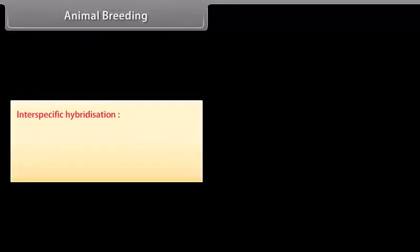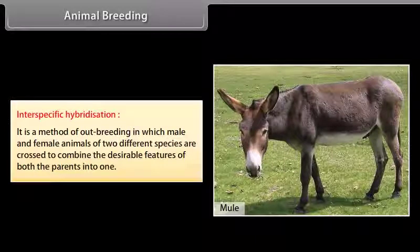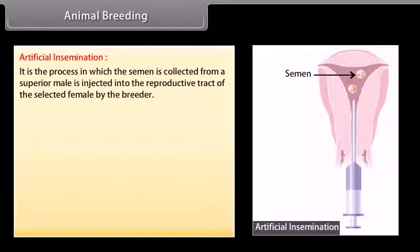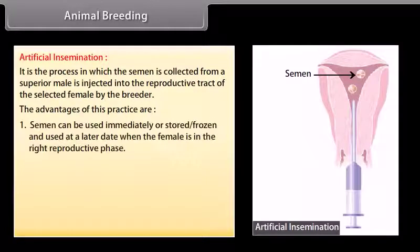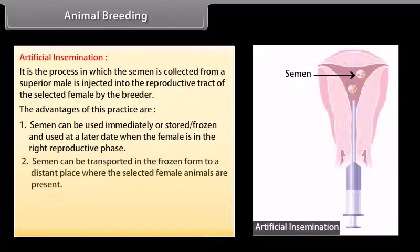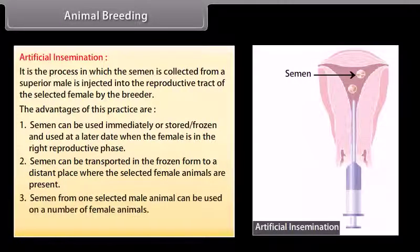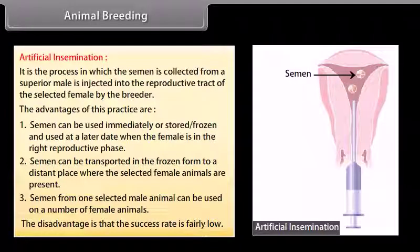Interspecific hybridization is a method of outbreeding in which male and female animals of two different species are crossed to combine desirable features of both parents. For example, the mule is produced by a cross between a male donkey and female horse. Artificial insemination is the process in which semen is collected from a superior male and injected into the reproductive tract of a selected female by the breeder. Advantages include: semen can be stored or frozen for later use, transported to distant locations, and used on multiple females. The disadvantage is that the success rate is fairly low.